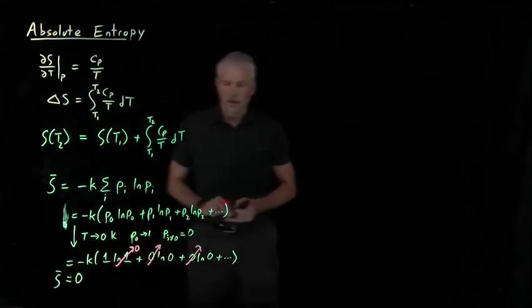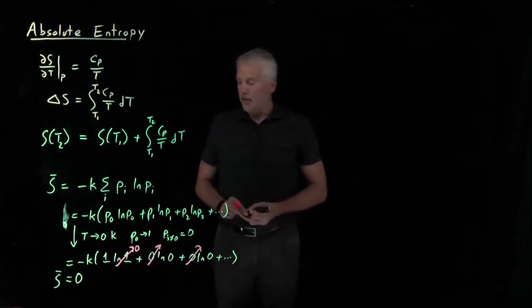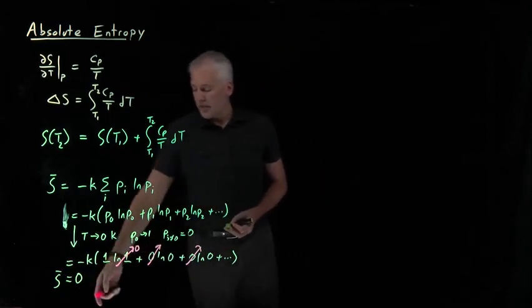at zero Kelvin, if I cool a system down as far as I'm able to cool it down, the entropy of that system will be zero.